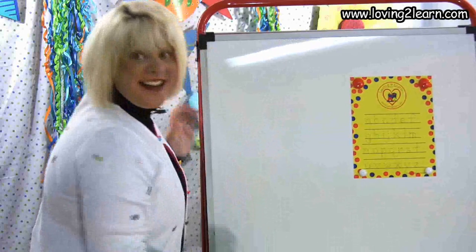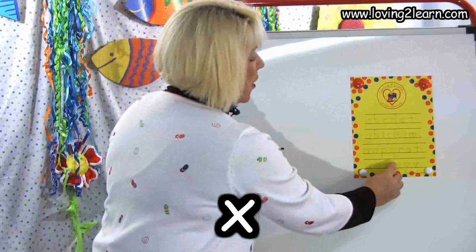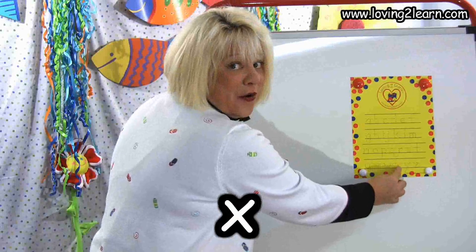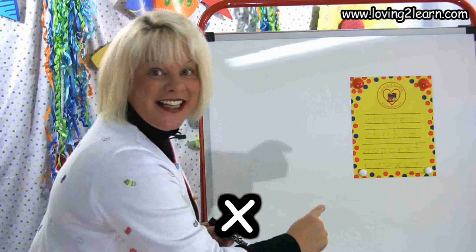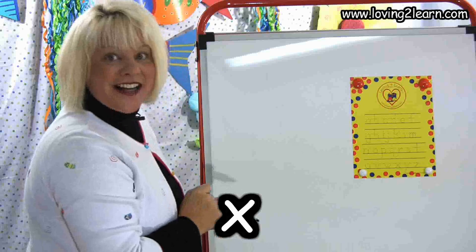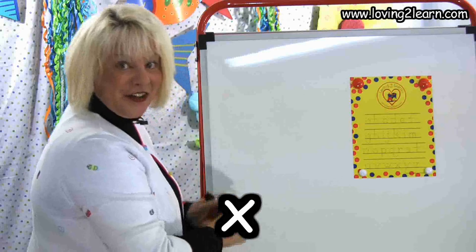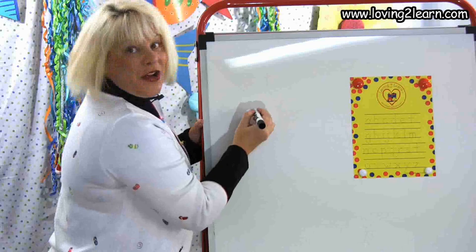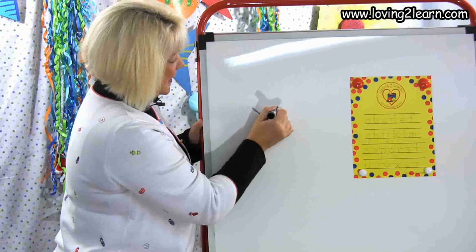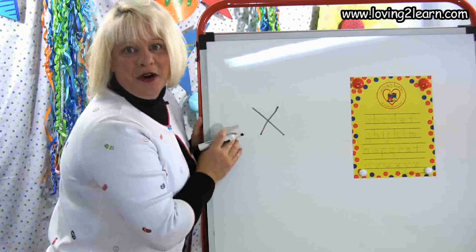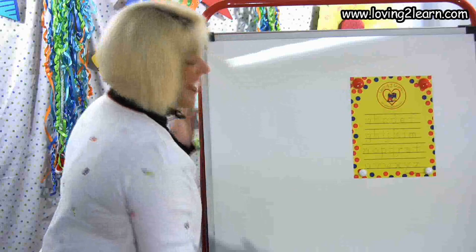The next letter is the letter X. X, we go slanted line down and slanted line across. Let's do that: slanted line down, slanted line across. Let's do it on the whiteboard: slanted line down, slanted line across. There's the letter X.